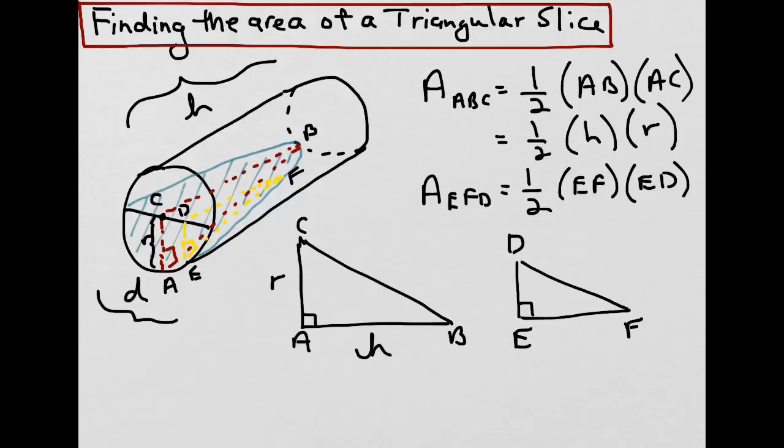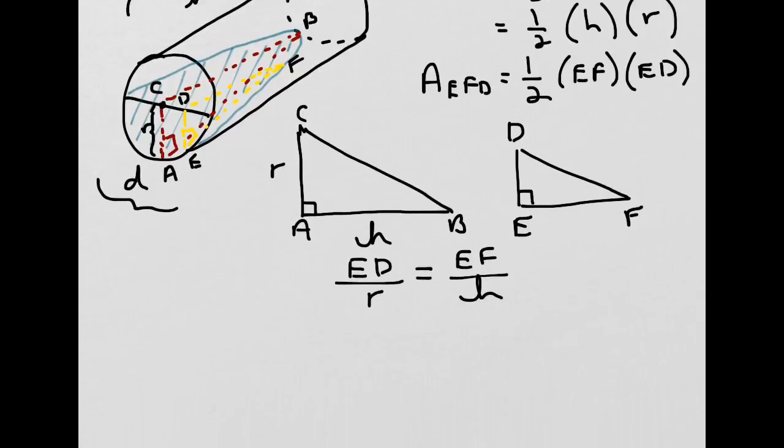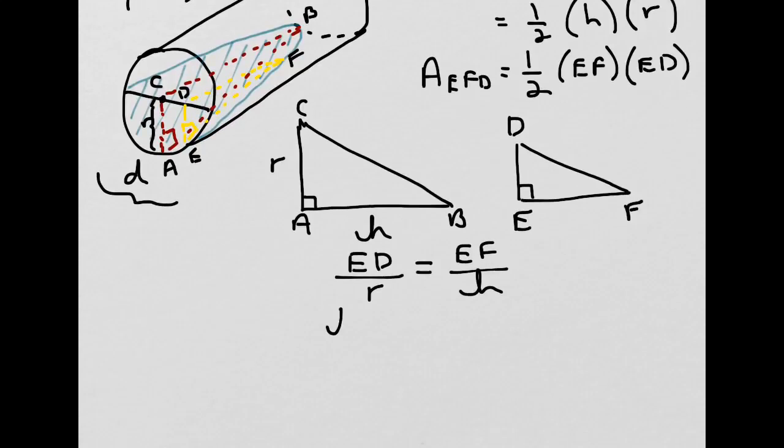And because these are similar triangles, we know that the ratio of the sides of the triangles are in the same proportion. So ED is to R as EF is to H. And let's say that we wanted to isolate EF, so we could cross-multiply. And what we would get is H times ED divided by R equals EF.